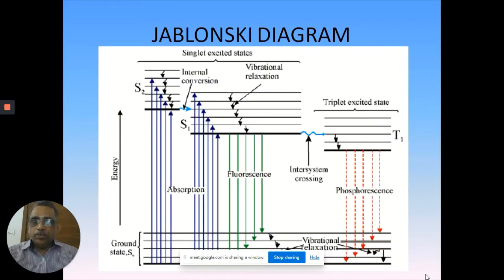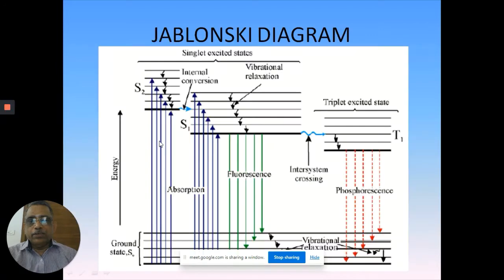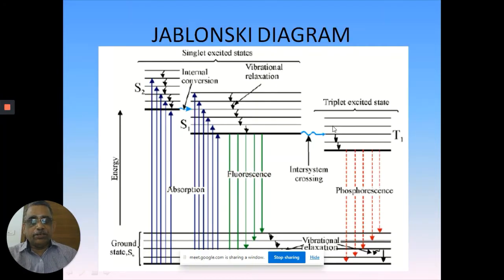Let's recall our Jablonski diagram, where we discuss all these photophysical processes. We studied about the absorption leading to the excitation of the molecule, fluorescence which is the radiative relaxation from the singlet state, inter-system crossing to the triplet state, and from the triplet you can have radiative and non-radiative processes. Now we are focusing on the radiative process, which is called phosphorescence.